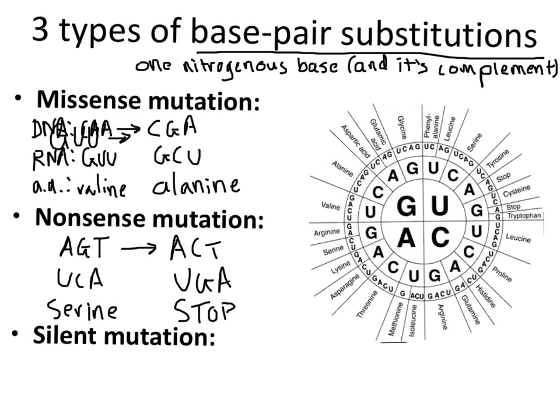Contrast that with the benign silent mutation. For example, if CAA was turned into CAG, both of the resulting codons still result in the same amino acid — GUU and GUC both code for valine. So silent mutations have no effect on the protein, nor on the phenotype.